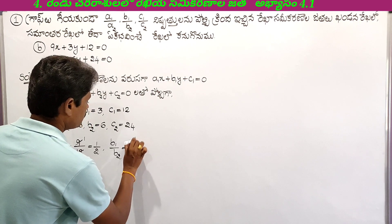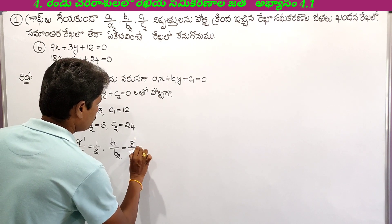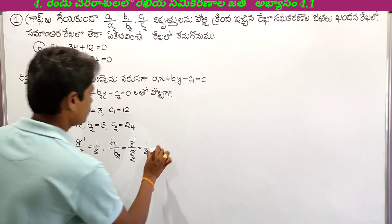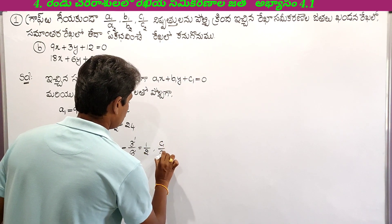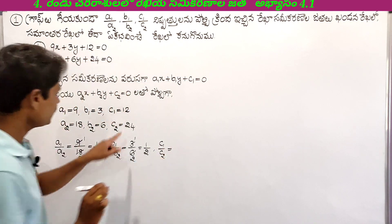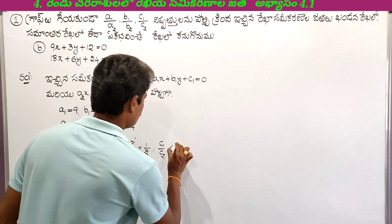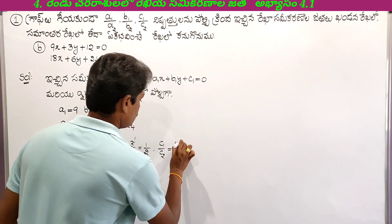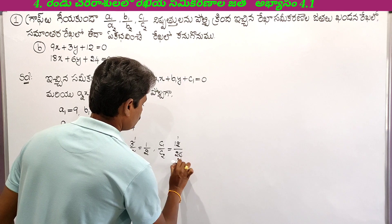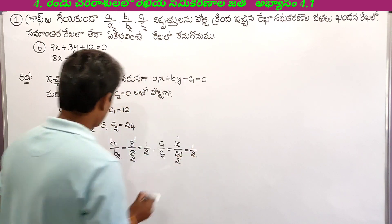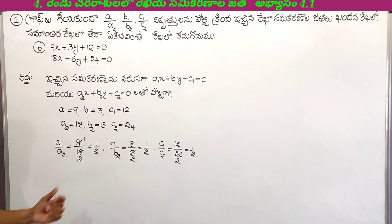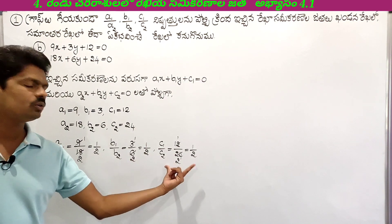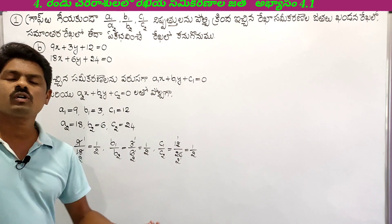Now computing: A1 by A2 — 9 by 18, simplifying 3 and 6, gives 1 by 2. B1 by B2 — 3 by 6, simplifying gives 1 by 2. C1 by C2 — 12 by 24, simplifying 12 and 12 gives 1 by 2. So A1 by A2 equal to 1 by 2, B1 by B2 equal to 1 by 2, C1 by C2 equal to 1 by 2.